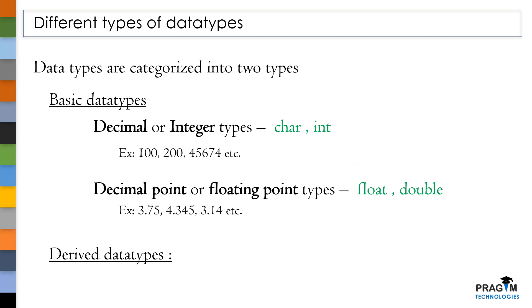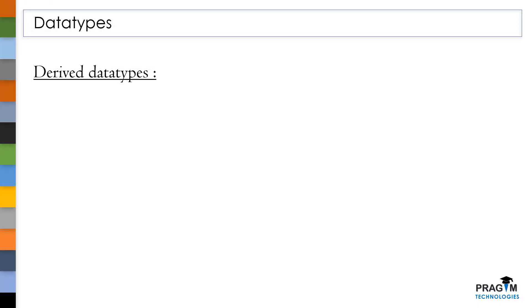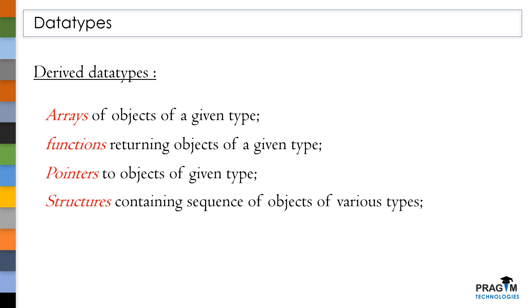And next, we have derived data types. Without basic data types, you cannot create a derived data type. By using these basic data types, programmer can create derived data types based on his requirement. In C standard, data types such as arrays, functions, pointers, structures and unions were added under the list of derived data types. We will discuss all these concepts in our upcoming sessions.